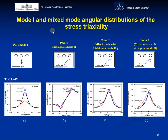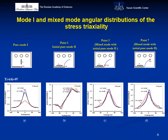Analysis of the stress triaxiality parameter behavior plays an important role in considering crack-tip processes with allowance for constraint effects. Here you can see mode 1 and mixed-mode angular distributions of the stress triaxiality. The angular distribution of triaxiality is computed using CMSDP for the investigated titanium alloy for pure mode 1, as well as for initial mode 2 at point 2 of the crack-growth path. It can be seen that with respect to pure mode 1, the distribution of the triaxiality parameter for pure mode 2 is almost insensitive to varying the crack-tip distance. For initial pure mode 2 loading at point 2, after the formation of a kink crack and at the end of the crack path close to final fracture at point 7, a pseudo-mode 1 scenario is realized at the tip.